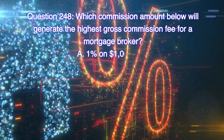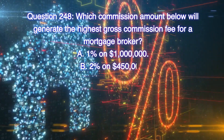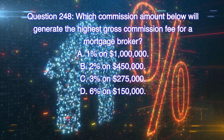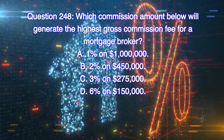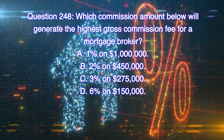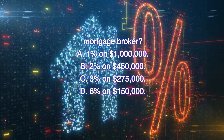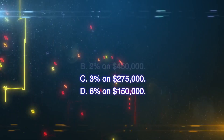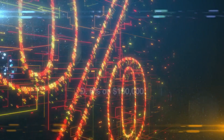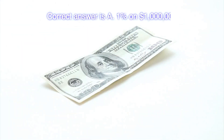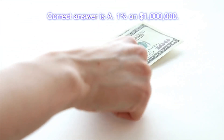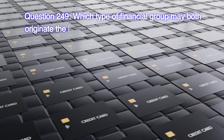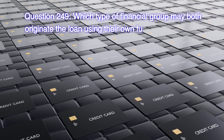Question 248: Which commission amount below will generate the highest gross commission fee for a mortgage broker? A) One percent on one million dollars, B) Two percent on four hundred fifty thousand dollars, C) Three percent on two hundred seventy-five thousand dollars, D) Six percent on one hundred fifty thousand dollars. Correct answer is A, one percent on one million dollars.